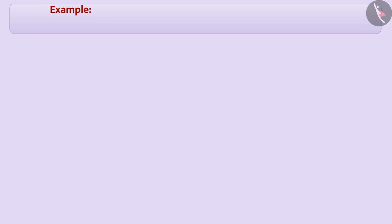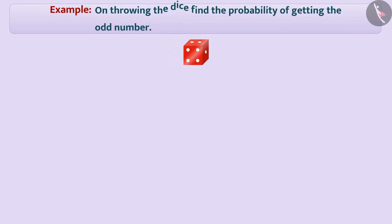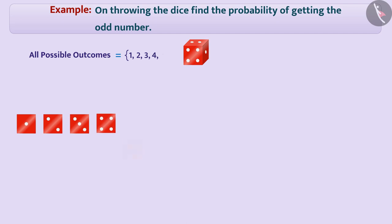Next example: On throwing the dice, find the probability of getting the odd number. All possible outcomes of the experiment of throwing the dice are 1, 2, 3, 4, 5, 6. Therefore, all possible outcomes of the experiment are 6.